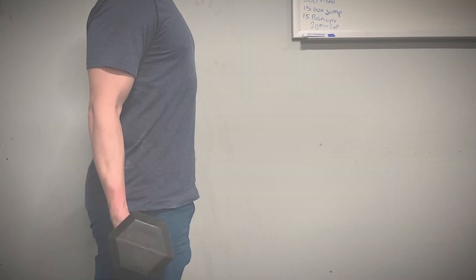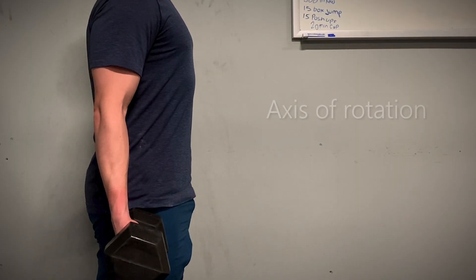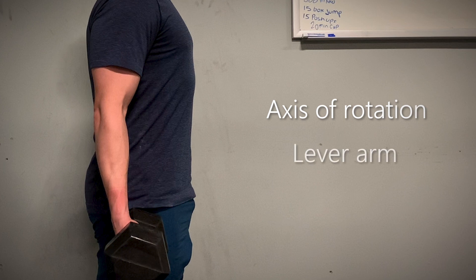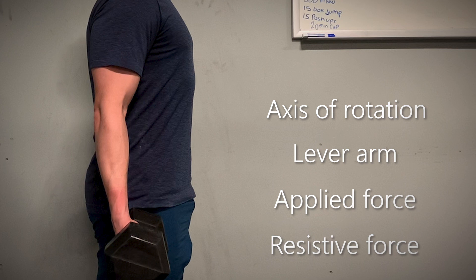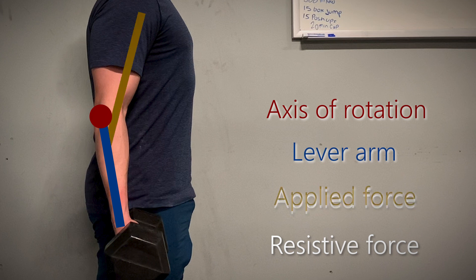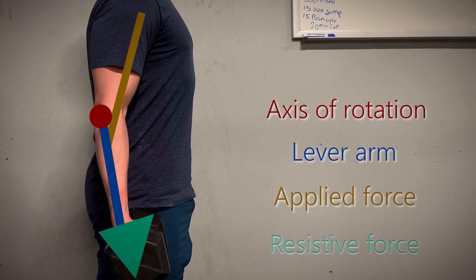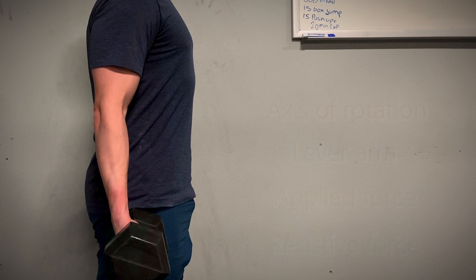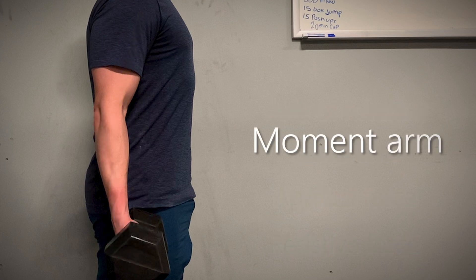To generate torque in any case, you need an axis of rotation, a lever arm, some sort of applied force, and some sort of resistive force. In this particular case, the elbow acts as the axis of rotation, the radius represents the lever arm, the bicep muscle generates the applied force, and the combined weight of the dumbbell and arm represents the resistive force. These four variables come together to create another invisible variable known as a moment arm — the perpendicular distance between the axis of rotation and the resistive force.